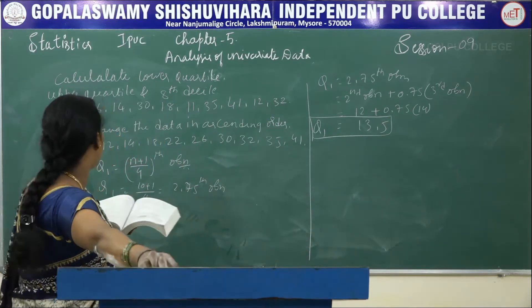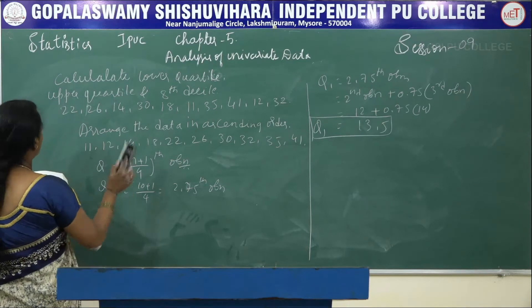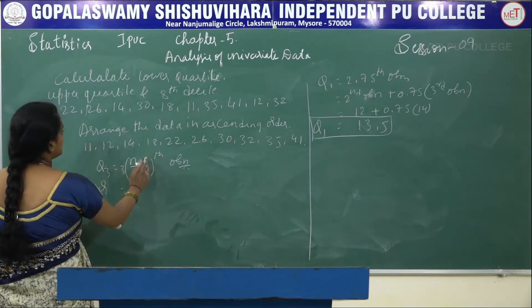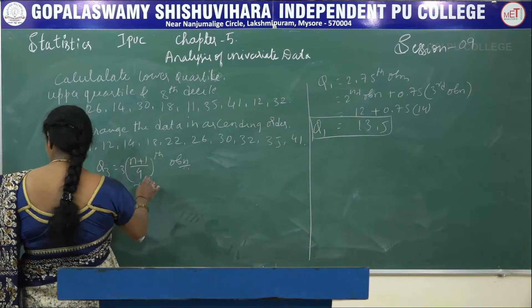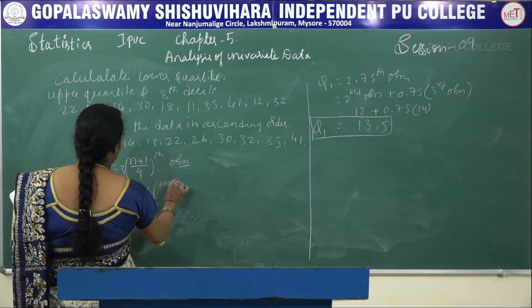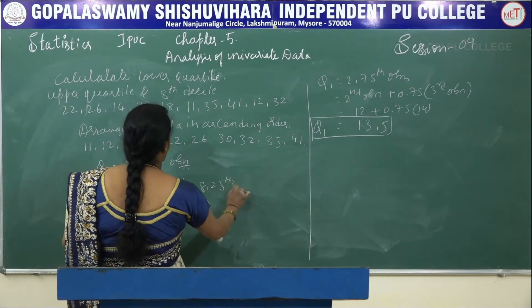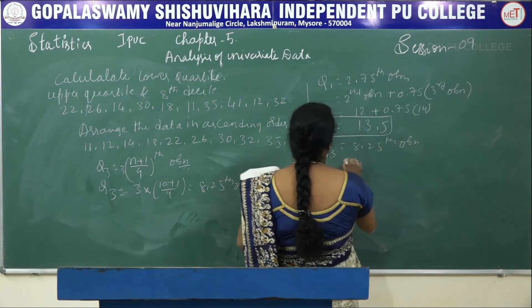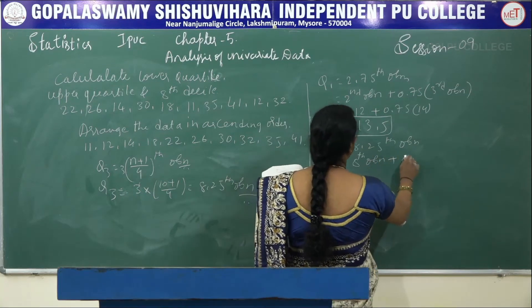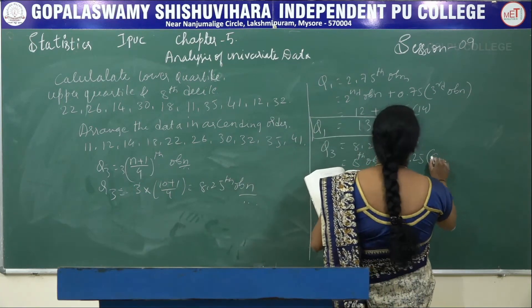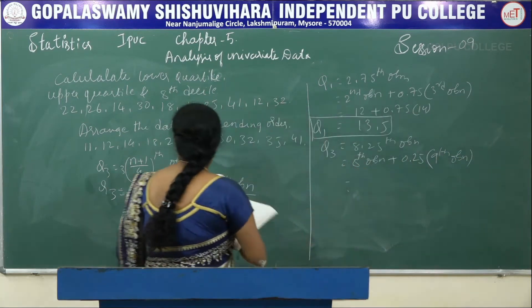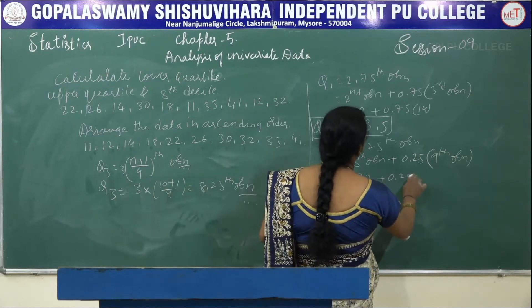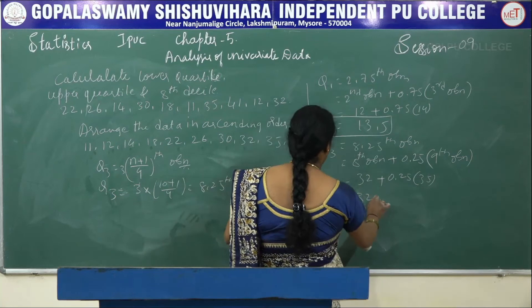Similarly, to find Q3, which is the upper quartile: Q3 = 3(n+1)/4 = 3×11/4 = 8.25th observation. Q3 = 8th observation + 0.25 × (9th observation) = 32 + 0.25 × (35 − 32) = 32.75.